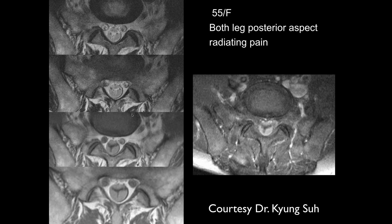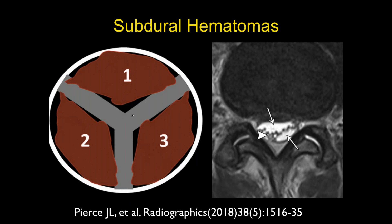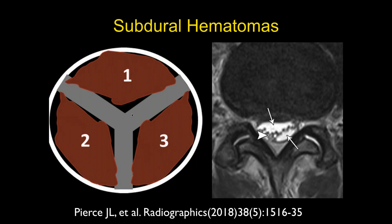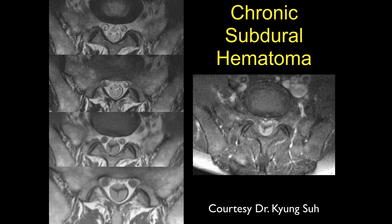Shiv, what do you think of this case? A 55-year-old woman with bilateral posterior leg radiating pain. This looks a lot like the cartoon just shown — with a sort of Mercedes-Benz sign, actually more like an aortic valve in the wrong spot. This is a classic chronic subdural hematoma.